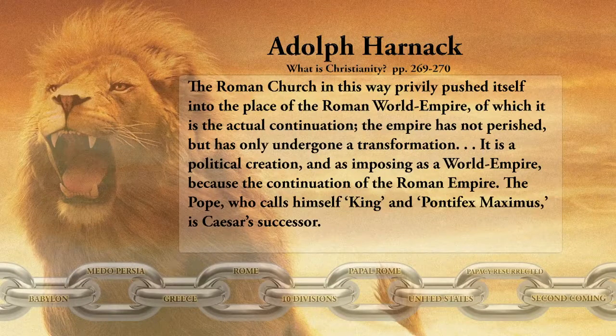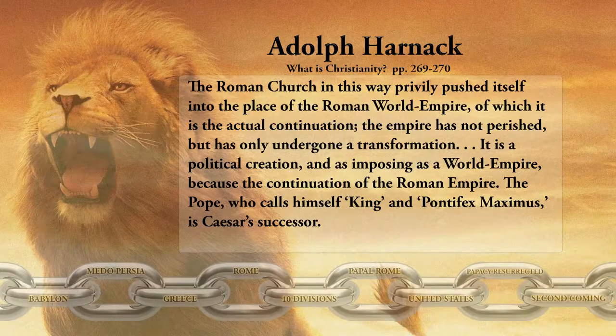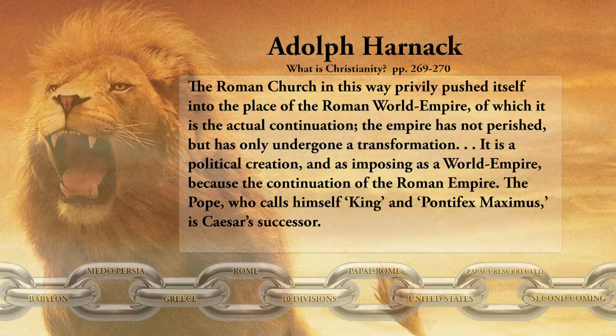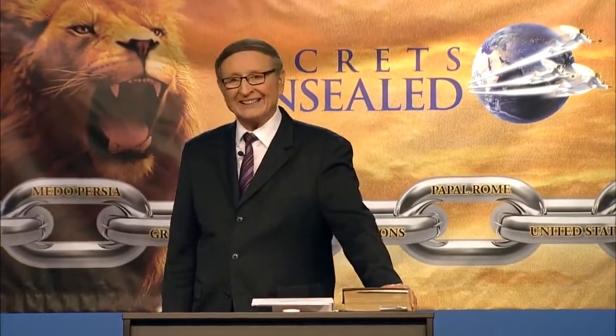Adolf Harnack wrote in What is Christianity?: 'The Roman church privately pushed itself into the place of the Roman world empire, of which it is the actual continuation. The empire has not perished, but has only undergone a transformation. It is a political creation, as imposing as a world empire, because it is the continuation of the Roman empire. The pope, who calls himself king and Pontifex Maximus, is Caesar's successor.' So is the little horn a Roman power? It most certainly is — it comes from the head of the fourth beast, which is Rome.